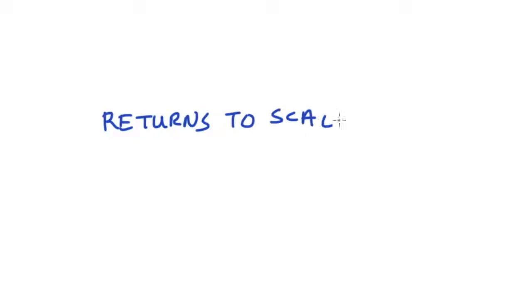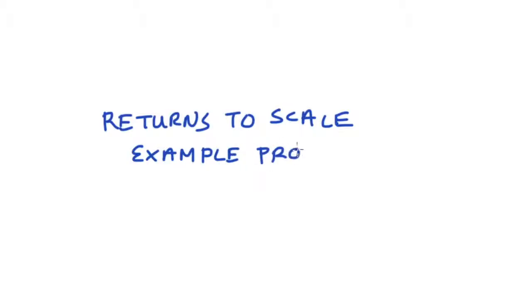In this video I'm going to run through some numerical examples where we work out whether a production function exhibits increasing, decreasing, or constant returns to scale.